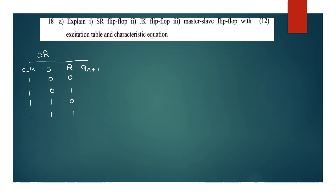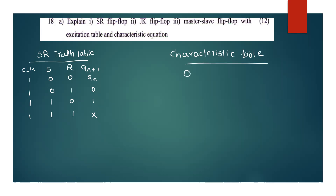We have SR and Qn+1. For SR = 0,0 the output is Qn (no change). For SR = 0,1 the output is 1. For SR = 1,0 the output is 0. For SR = 1,1 it is an invalid state.